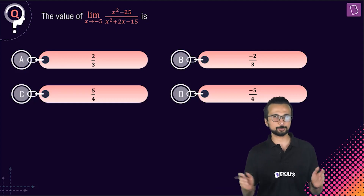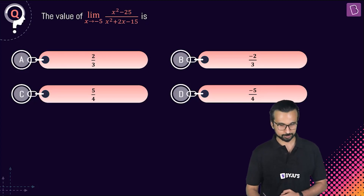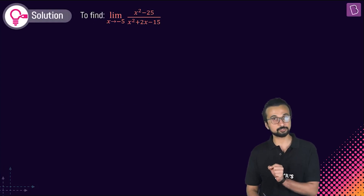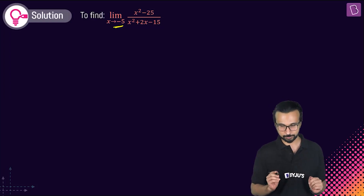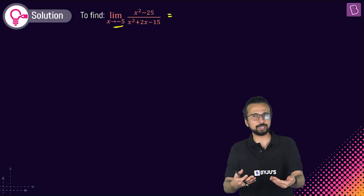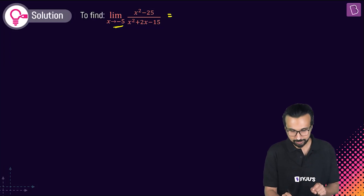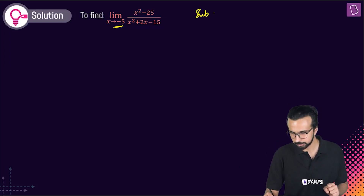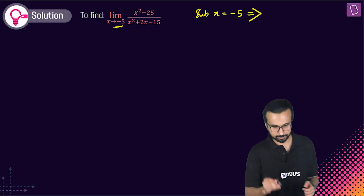In this question we need to find the value of the limit of (x²-25)/(x²+2x-15) as x tends to -5. We'll try to factorize since we see quadratics in the numerator and denominator — hopefully something will cancel. Let's first substitute x = -5 to check.